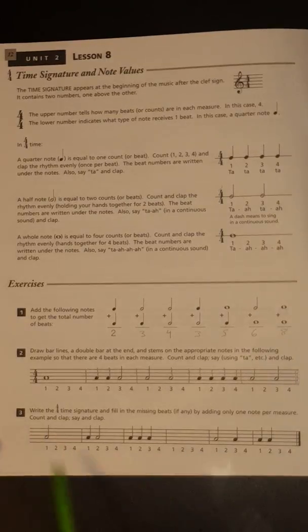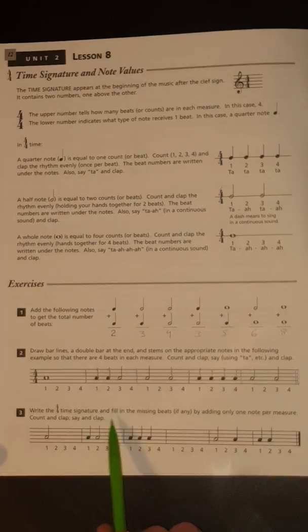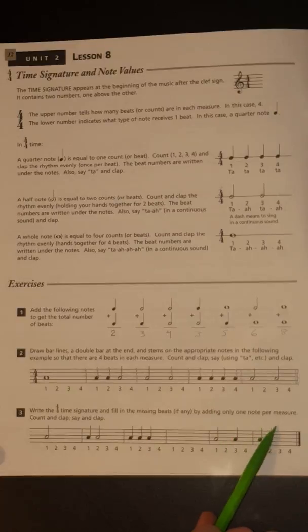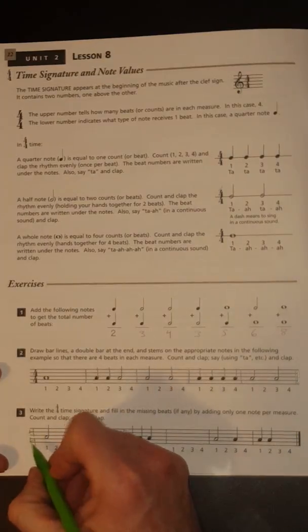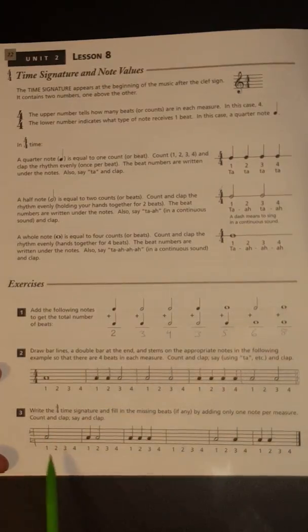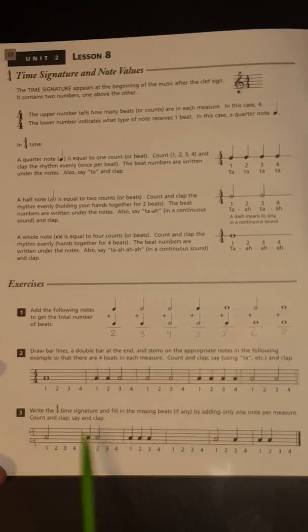Number three, here we go. Write the four four time signature and fill in the missing beats if any by adding only one note per measure. Count clap, count and clap, say and clap. Let's write our four four in so we know it's a four four time signature. They've already got the bar lines in.